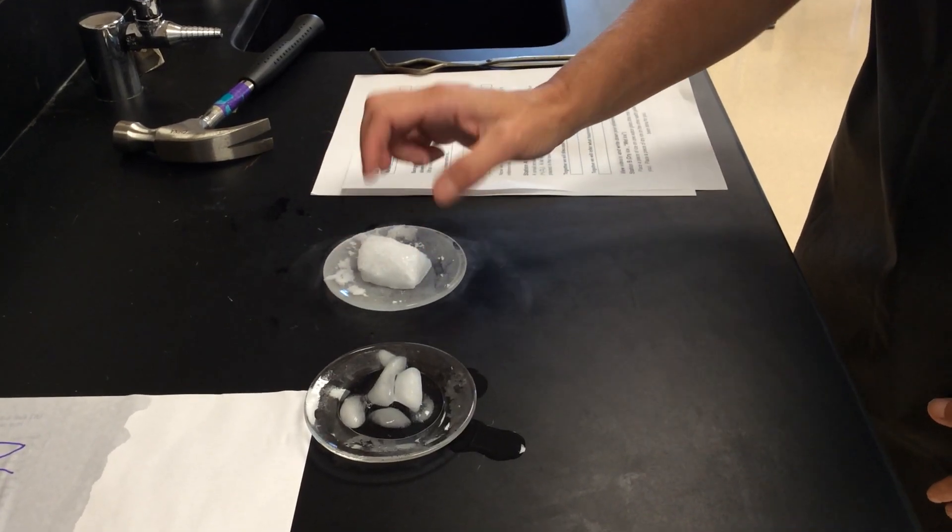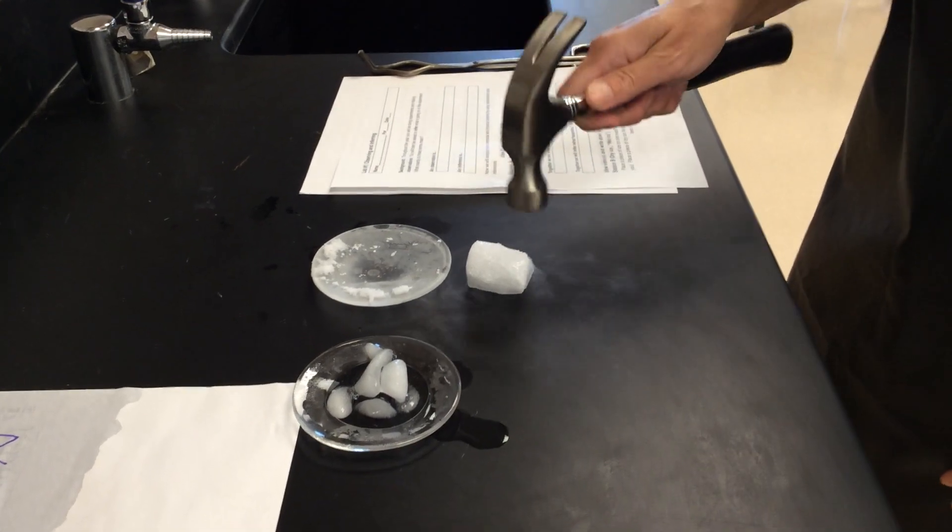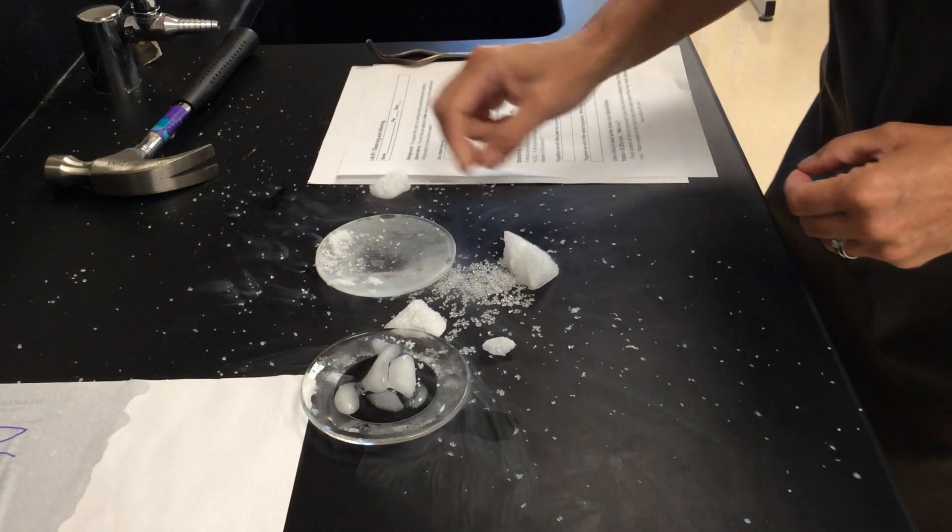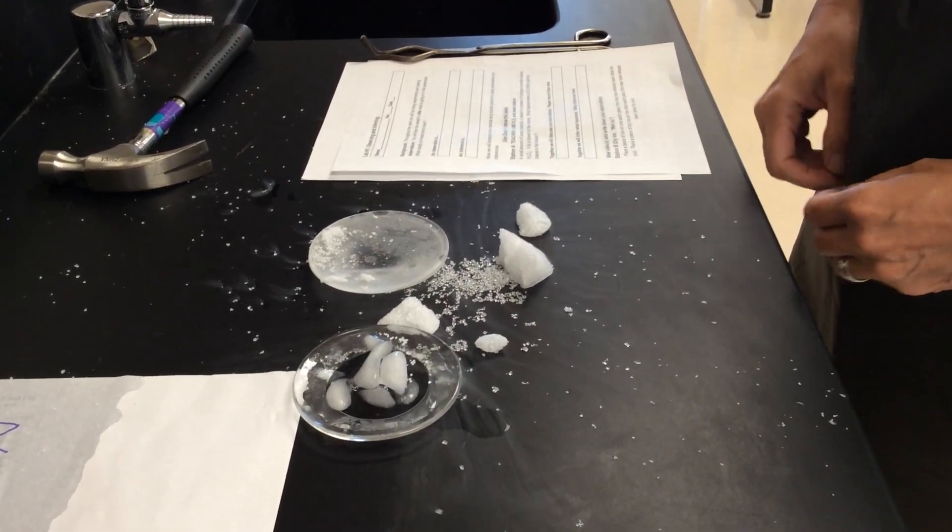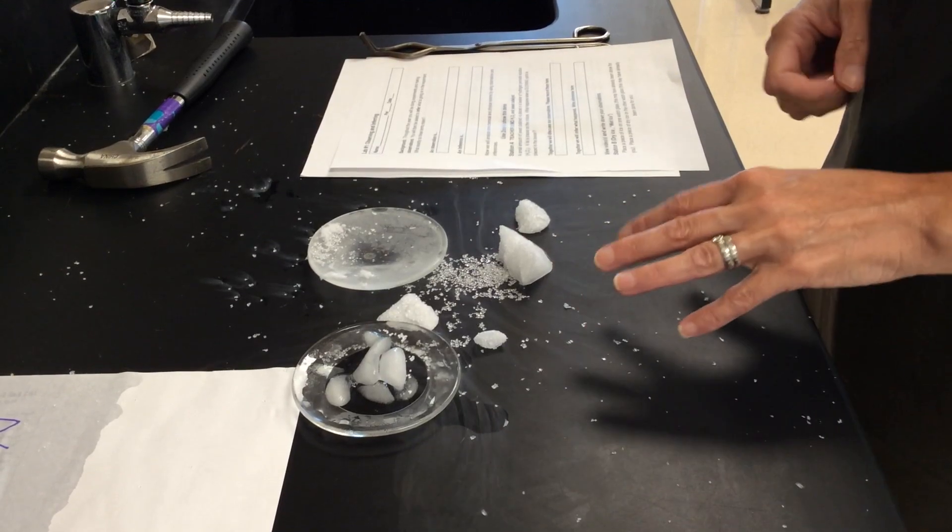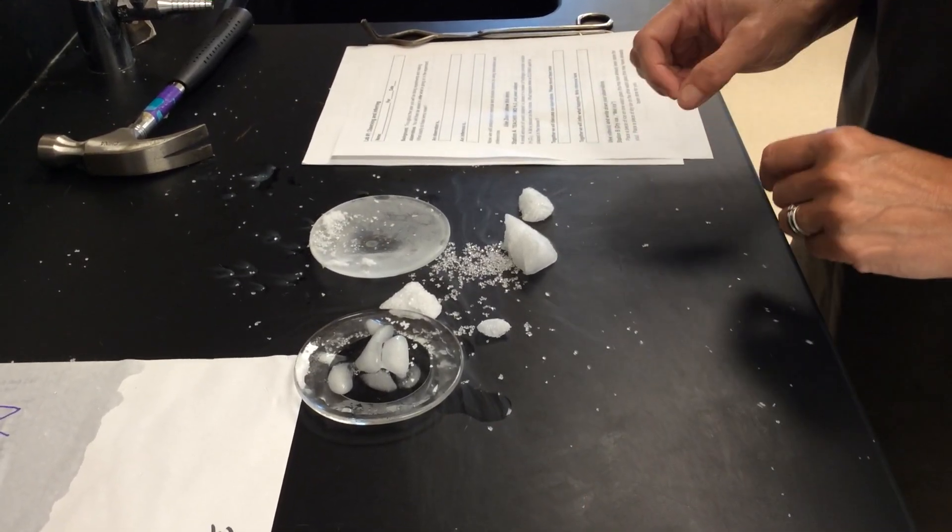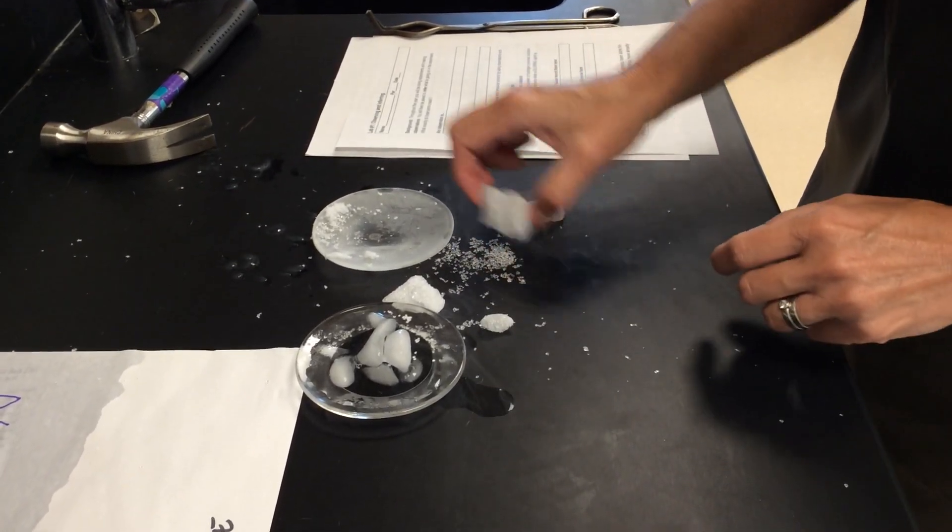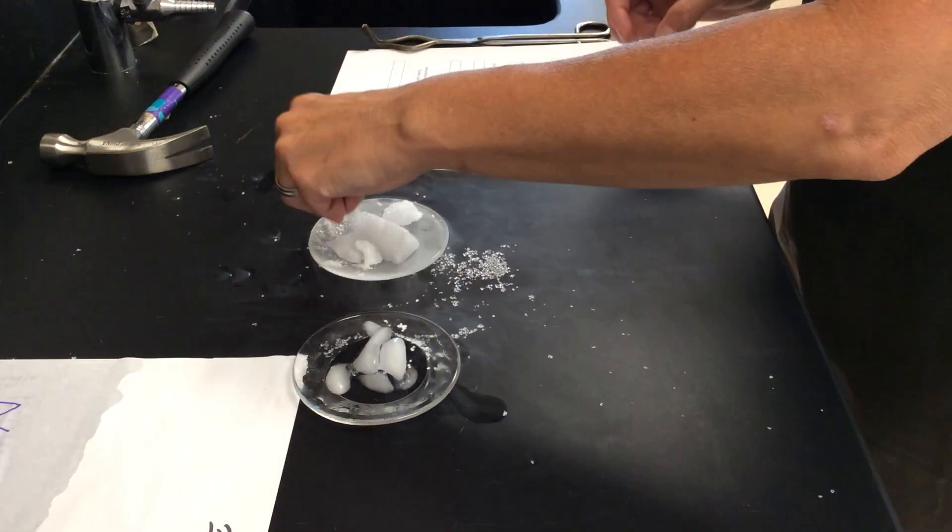Now I'm going to take this piece of dry ice, and I'm going to place it on the counter. Can you hear the sound that it's making? And I'm going to hit it with a hammer. Notice what happens. We've got all sorts of little pieces. They're vibrating, if you can hear that, and they're sliding around on the lab bench. I'm going to put them back on the watch glass. They're very cold. We should not do this at home without gloves.